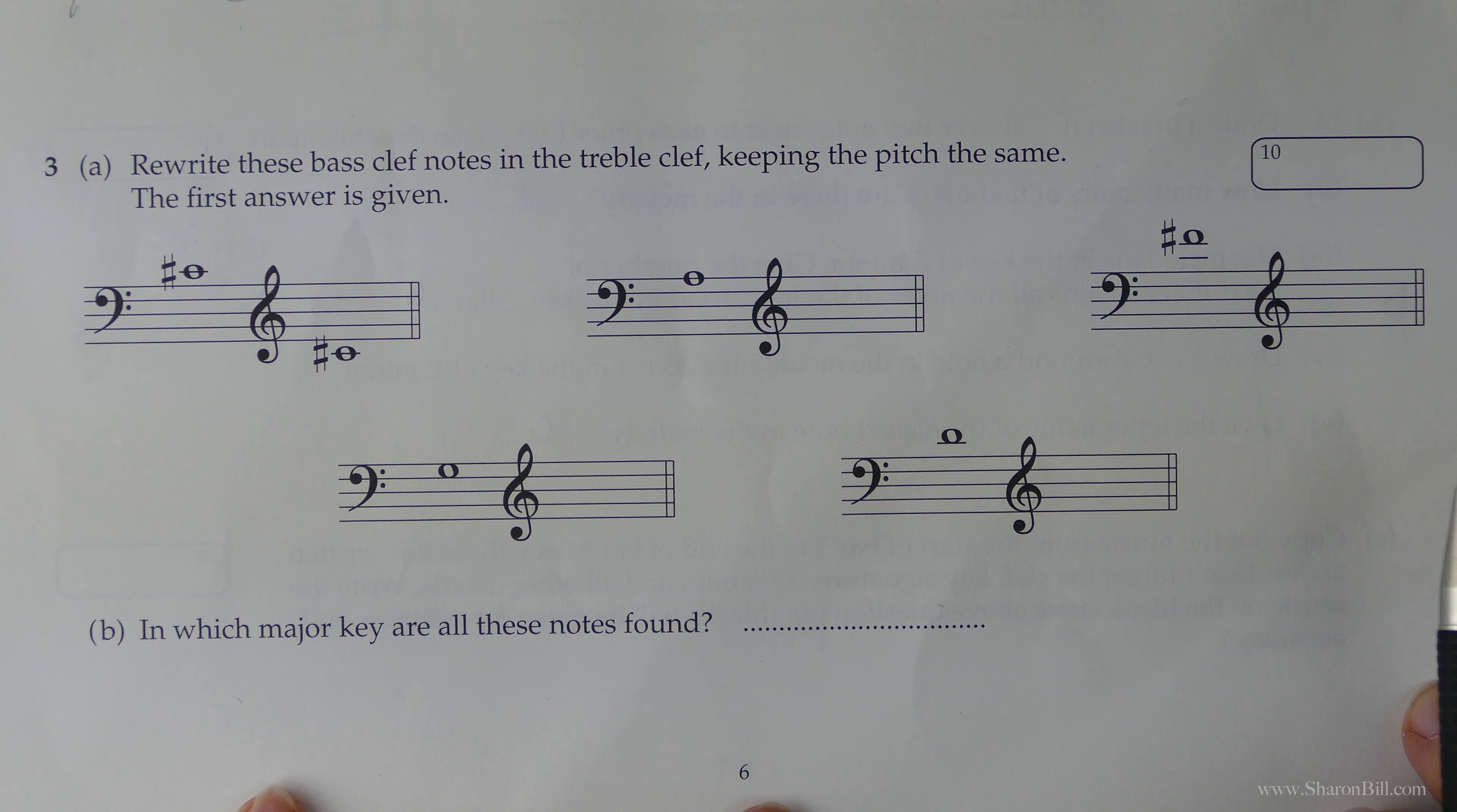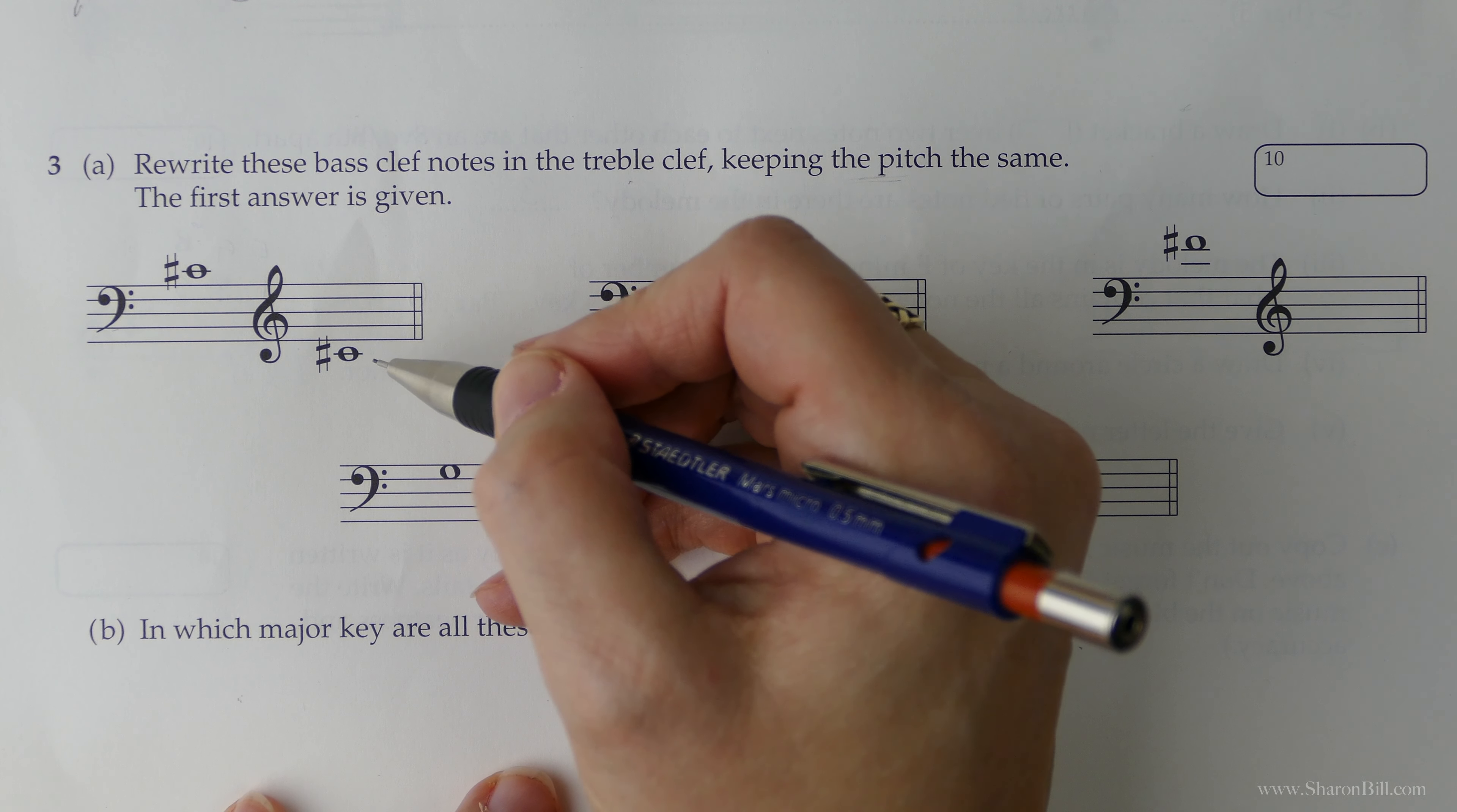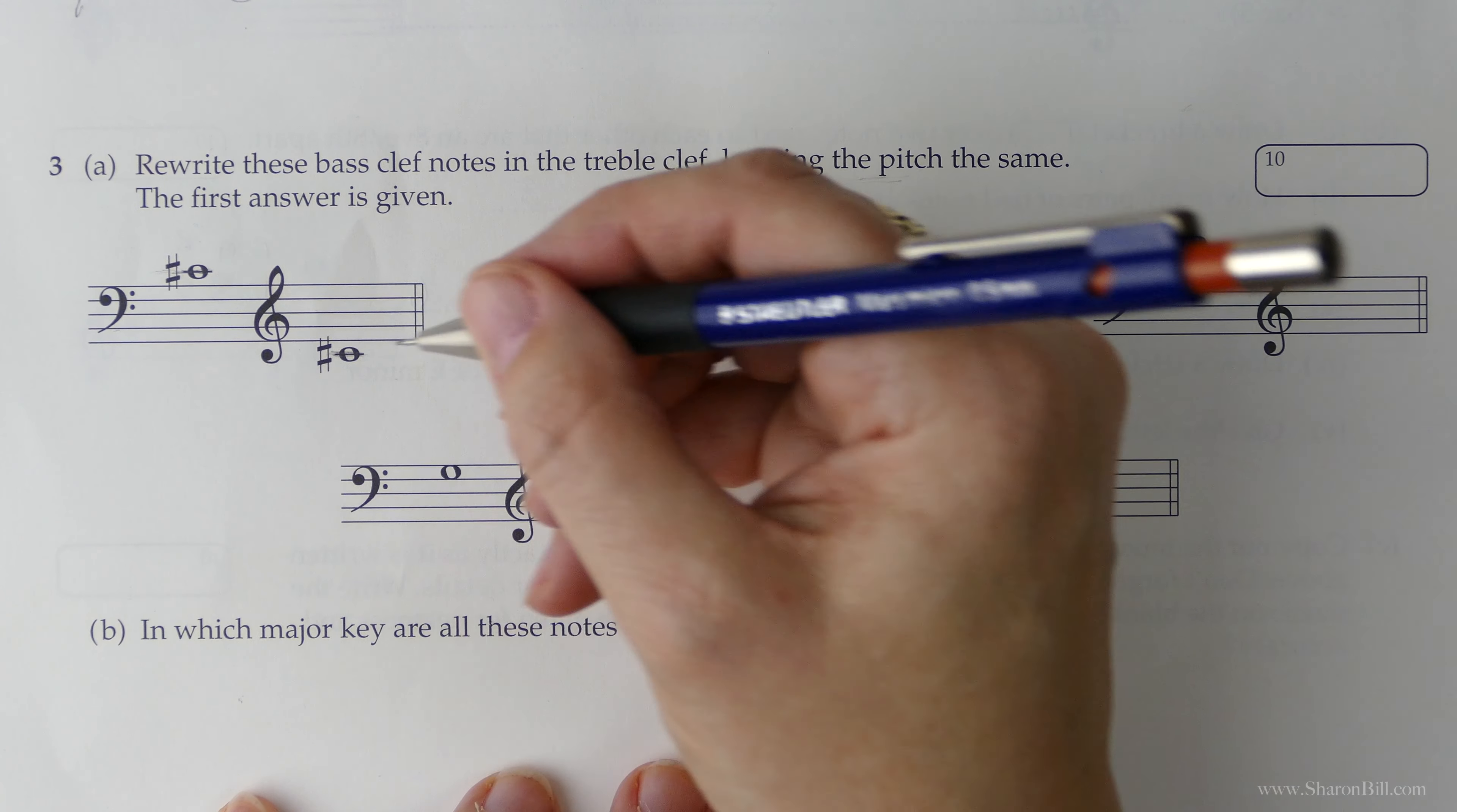So we can skip that one and we can crack straight on to question three. Then question three asks us to rewrite these bass notes, so we've given some notes in the bass clef and we need to rewrite them into the treble clef but keeping the pitch the same. We've got to be very careful that we don't end up jumping octaves. They've given us the first answer as an example which is helpful. Now the best way of approaching this so you don't end up jumping octaves and getting your pitch wrong is to always relate back to middle C. So we can see here's middle C, it's at the top of the bass, the bottom of the treble. So there's middle C in the bass, there's middle C in the treble. So if we keep referring to that point we shouldn't go far wrong.